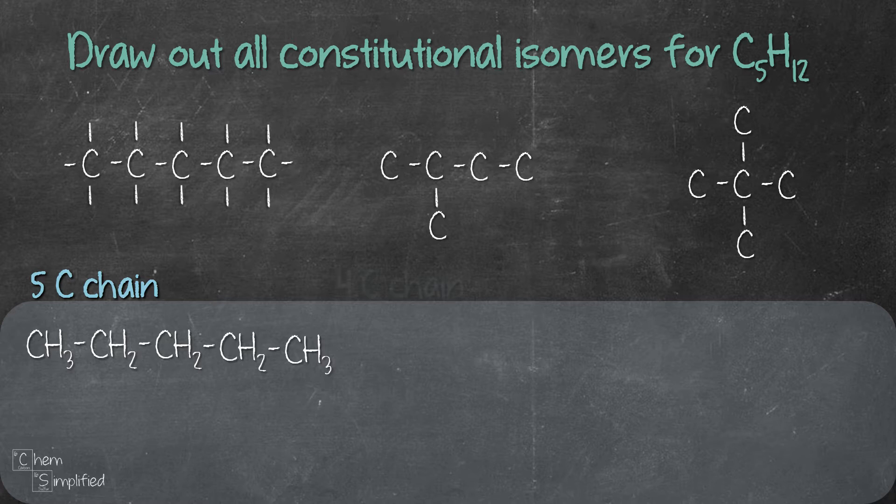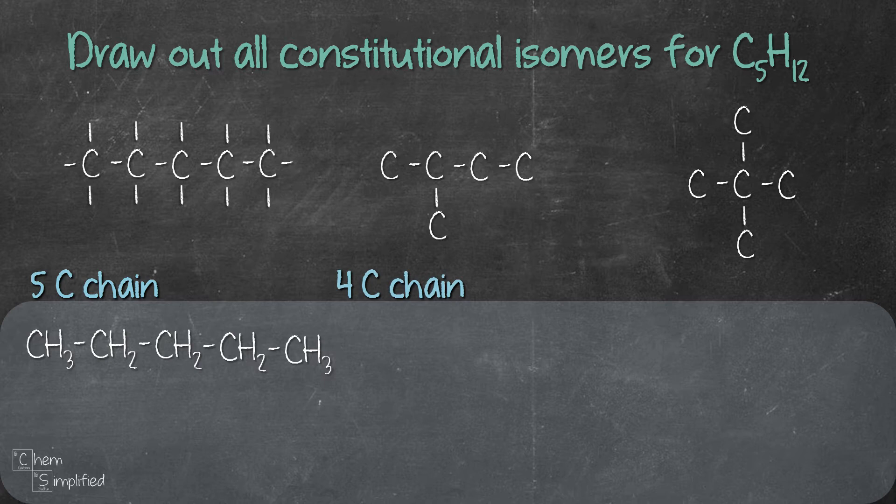Moving on to the second isomer, the 4 carbon chain. Here are the remaining bonds that each of the carbons has. And here's the condensed structure for the second isomer.